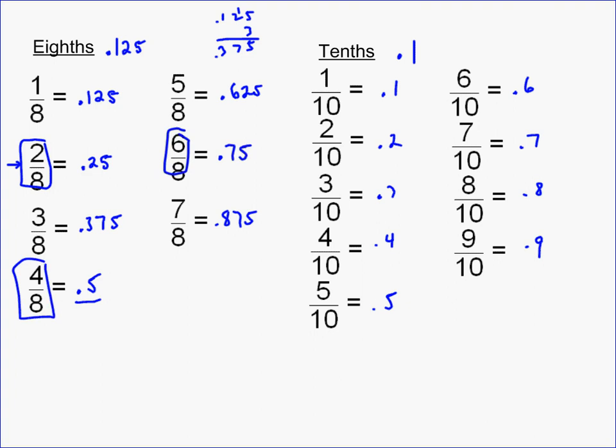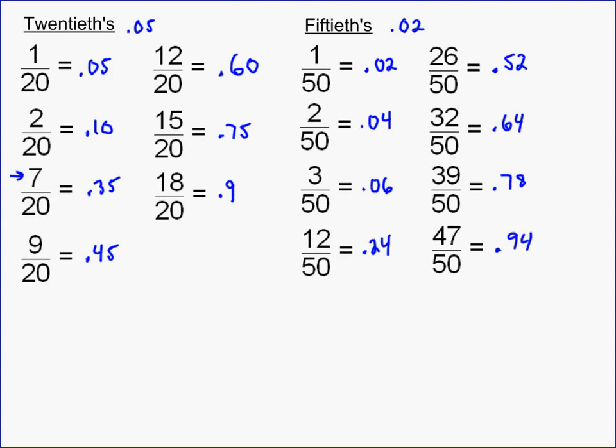Tenths are the easiest. You just check whatever's on top. You just put a decimal in front of. And then the last two we looked at were 20ths. Multiply by 5 and put a decimal in front of it. And then the 50ths, multiply by 2 and put a decimal in front of it. So these you should be able to do quickly. You don't want to waste time trying to figure out what these decimals are. It's just going to take you more time than you should spend on any math test or quiz or math competition.